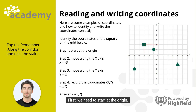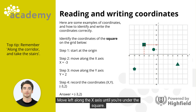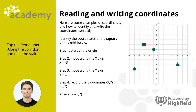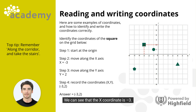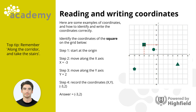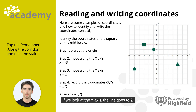First, we need to start at the origin. Move left along the x-axis until you're under the square. We can see that the x-coordinate is minus 3. Next, move up. If we look at the y-axis, the line goes to 2.